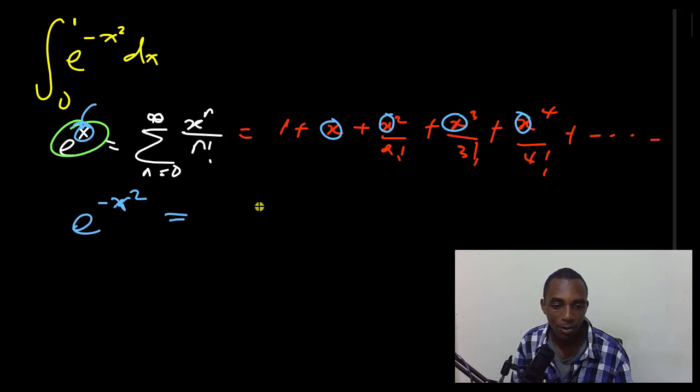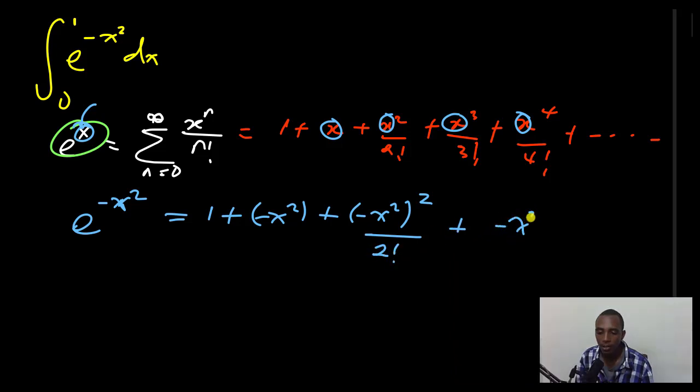So this is going to be 1 plus negative x squared plus negative x squared squared over 2 factorial, negative x squared to the power 3 over 3 factorial, negative x squared to the power 4 over 4 factorial, and so on.